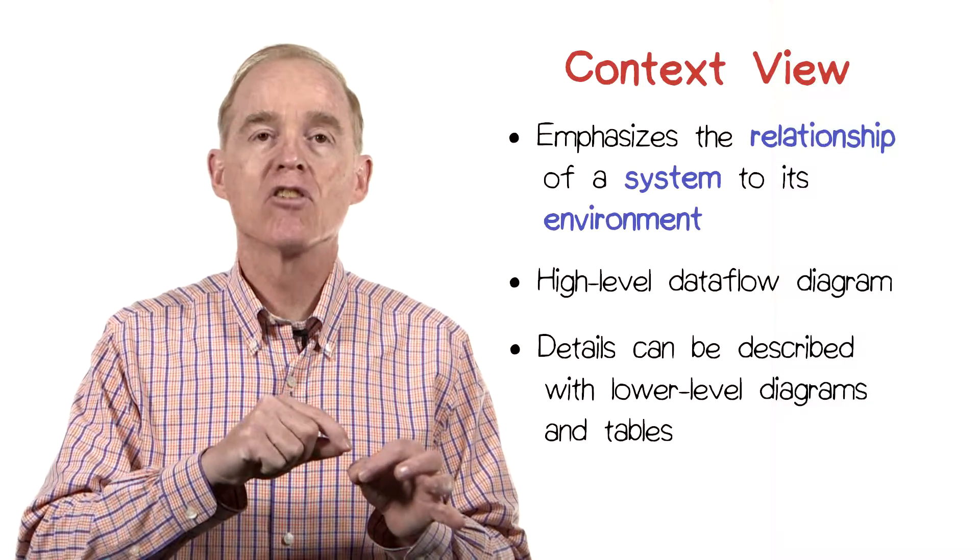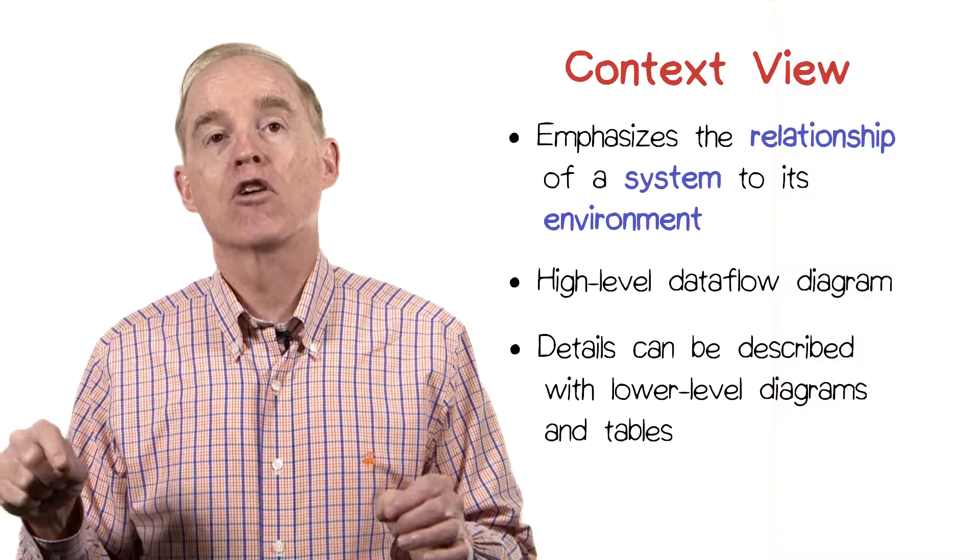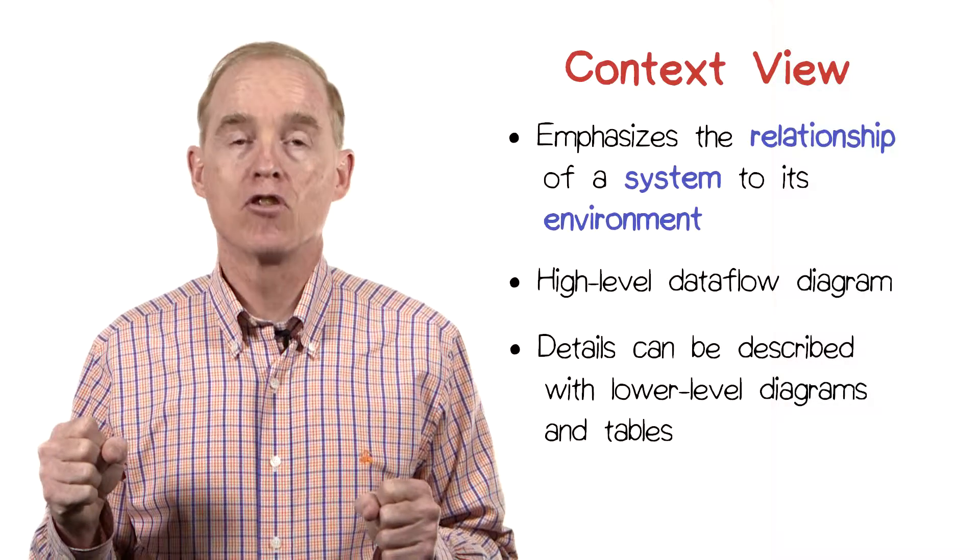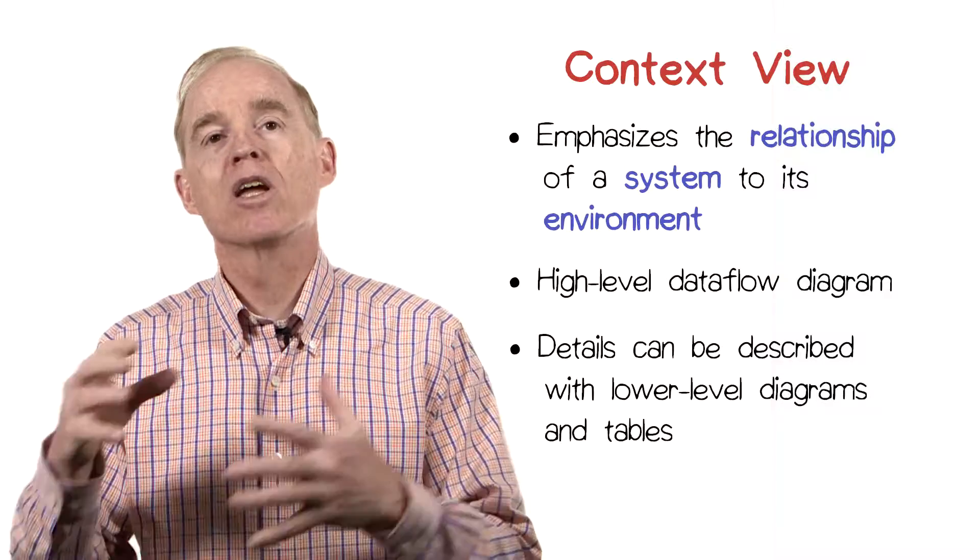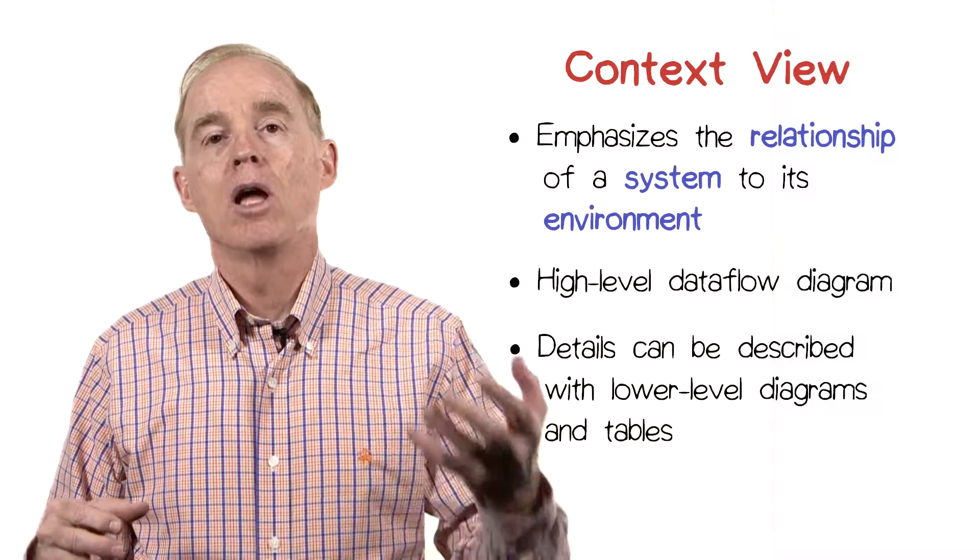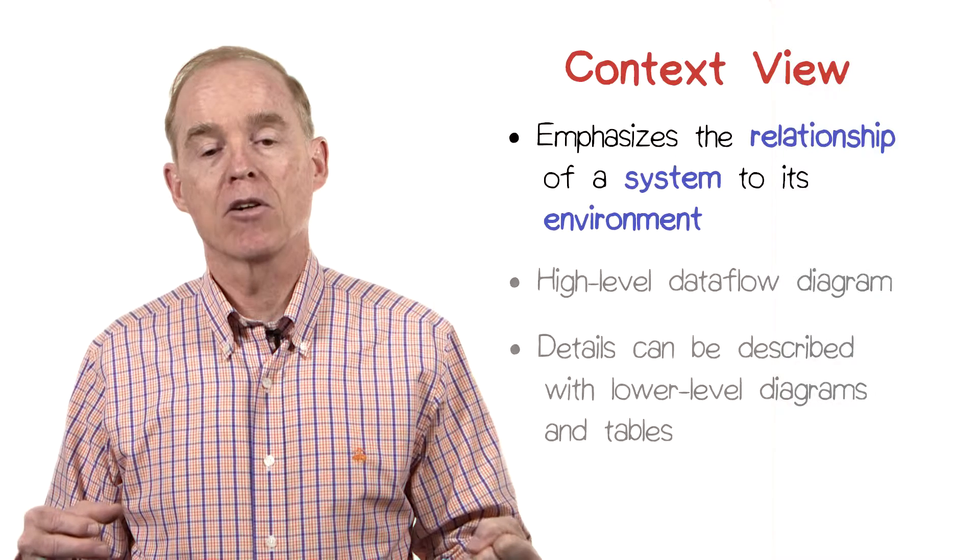The lines that connect the actors to the system are called data flow lines. That is, there's some communication of data between the actor and the system, or the system and the actor.